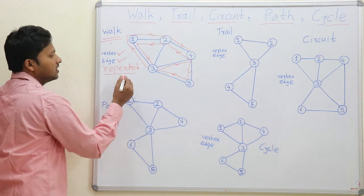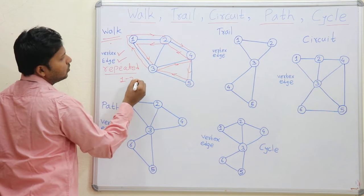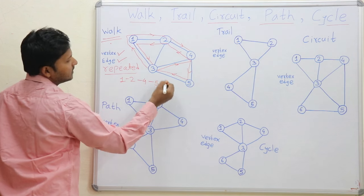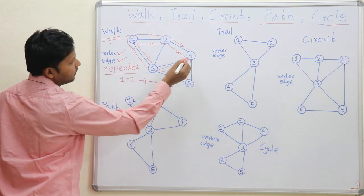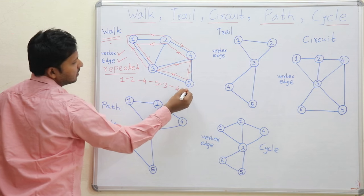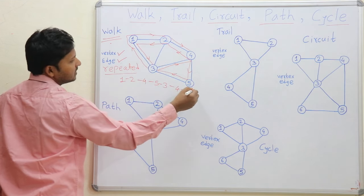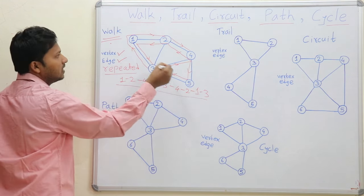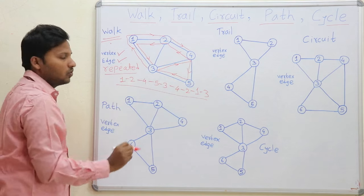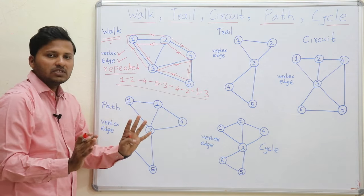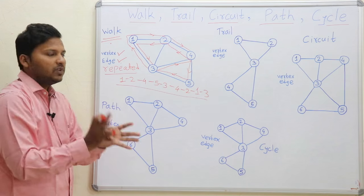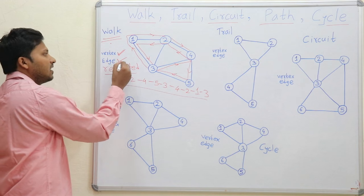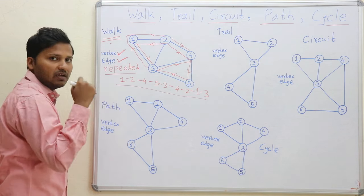So the walk here is: 1, 2, 4, 5, 3, 4 again, 2 again, then 1 and 3. This was our walk in this graph. In a walk, you can traverse in any way — vertices are allowed to be repeated and edges are also allowed to be repeated.